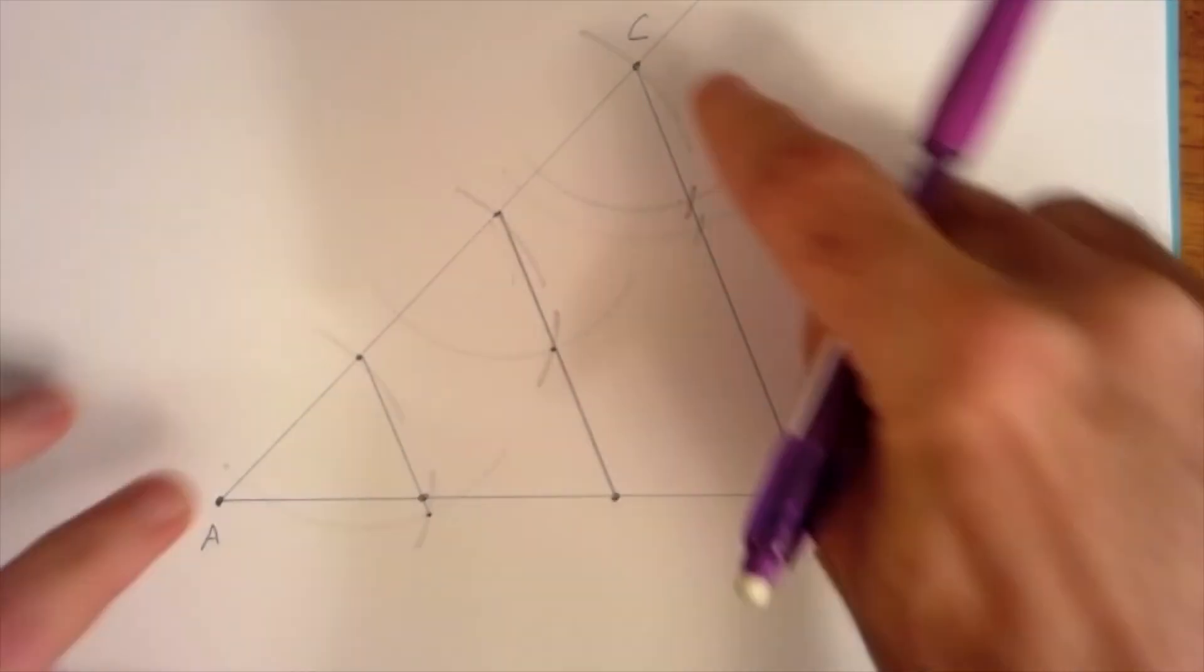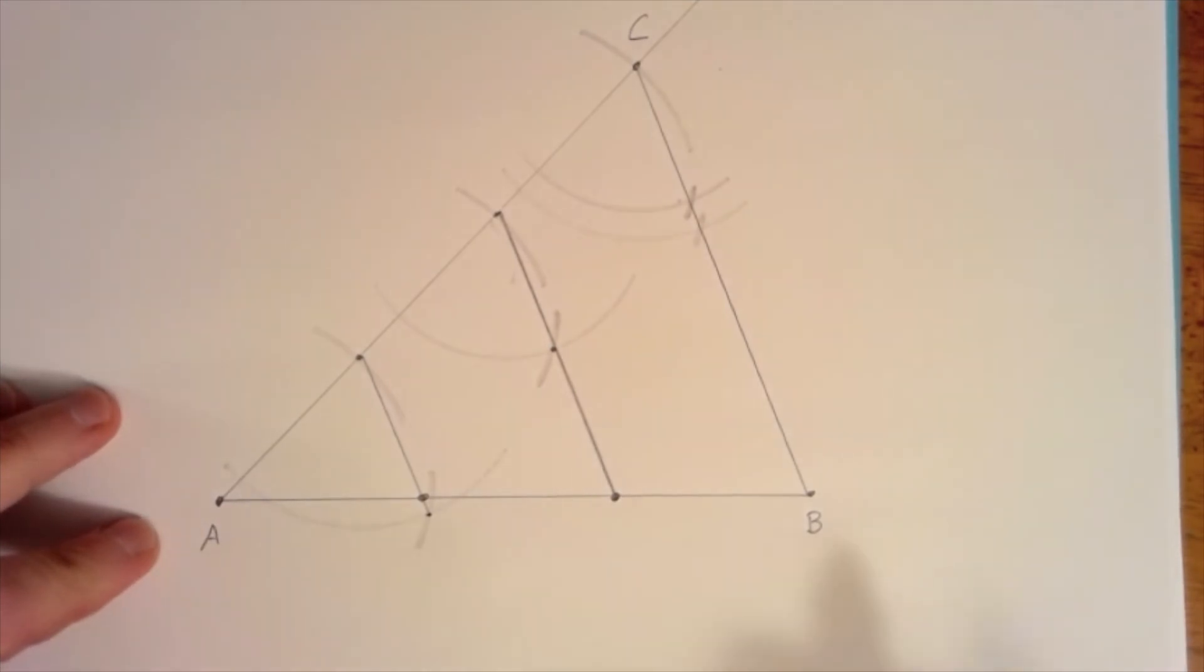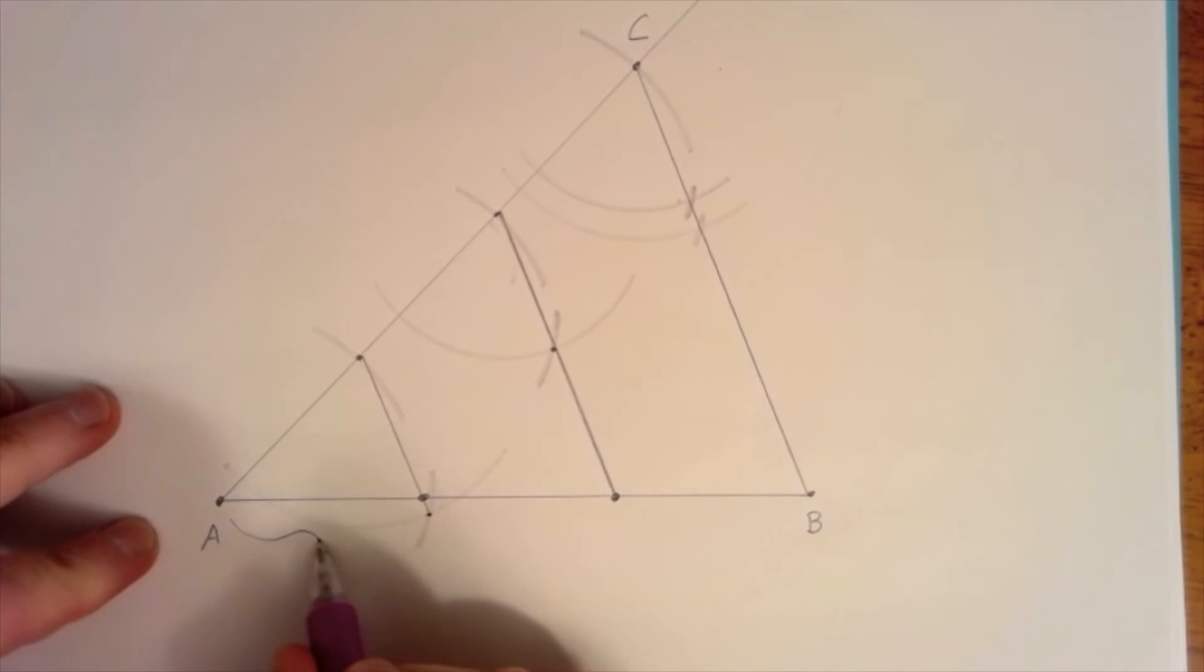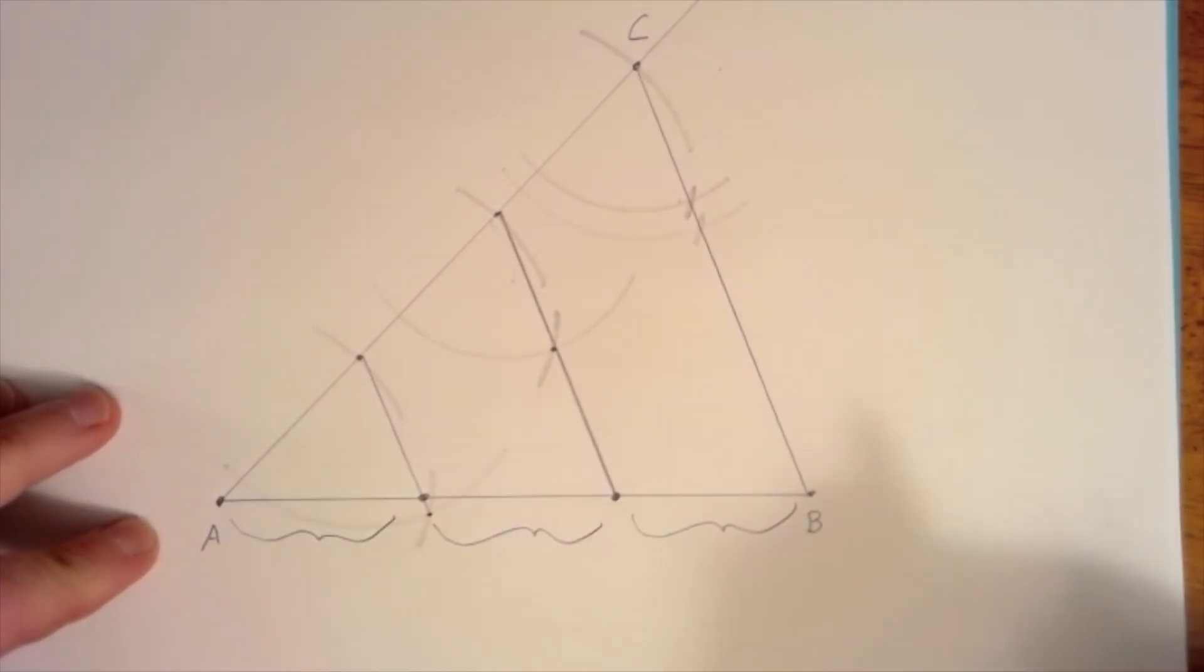So now we've made three similar triangles. This big one, this medium one, and this small one. And because they're similar triangles they have the same angles. These are all going to be in proportion. And so this length here, this length here, this length here, and this length here are all going to be the same. So I've trisected AB.